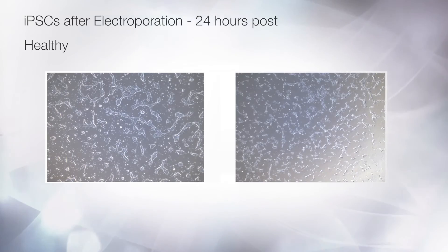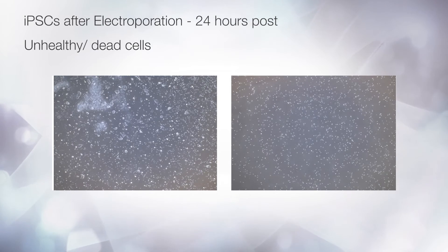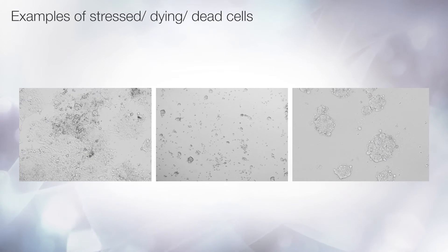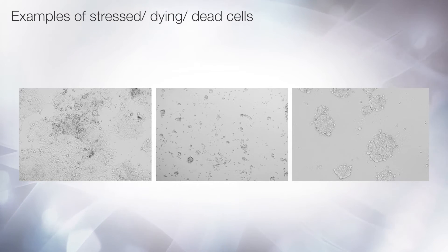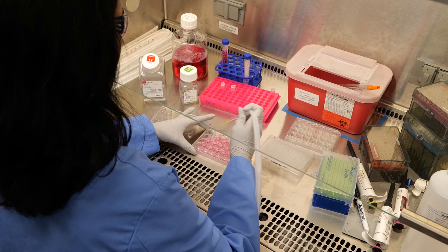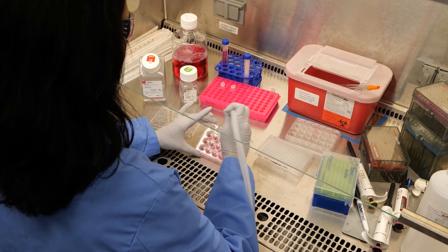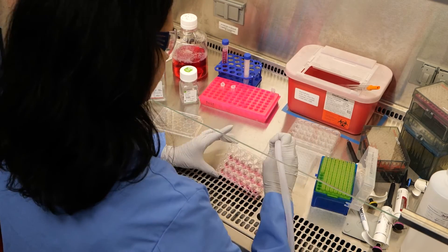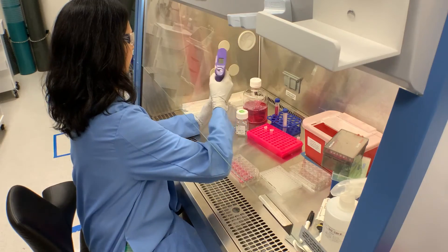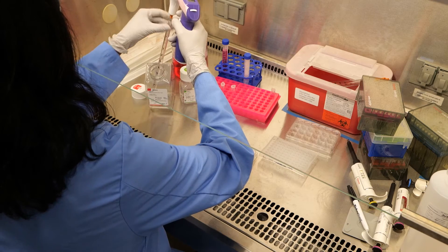At 24 and 72 hours post-transfection, cells should be assessed for toxicity. Key things to look out for include cell stress, death, and contamination. If cells look stressed, refreshing the media can help them to recover. Re-feed your stem cells 24 hours post-electroporation and every other day thereafter. Once the cells have been deemed healthy at 72 hours post-transfection, genomic cleavage detection or GCD can be performed to measure editing efficiency for each gRNA tested.